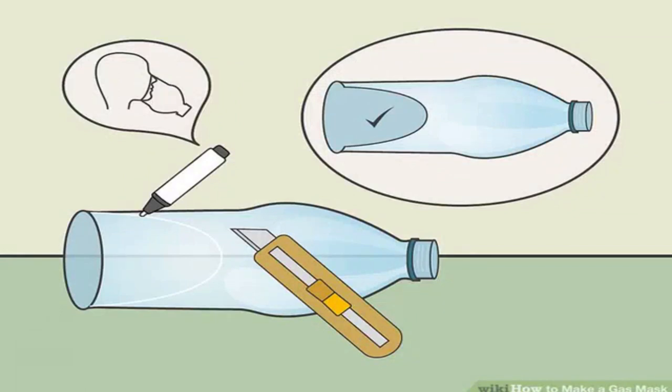Use a marker to draw a U across the front of the bottle, cap side down. This needs to fit snugly across your face, stopping roughly at your temple and below your chin.